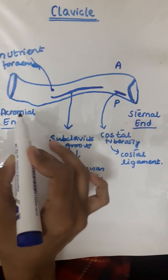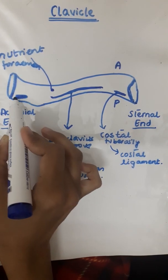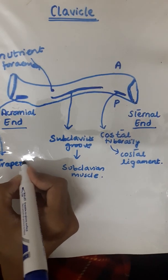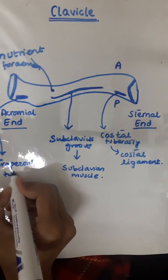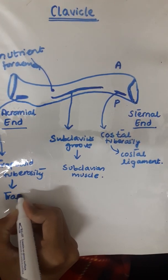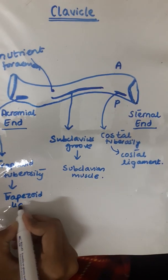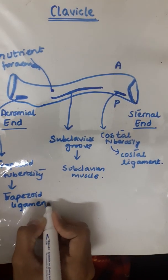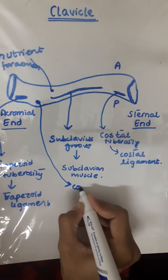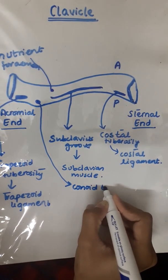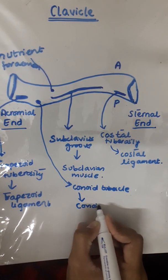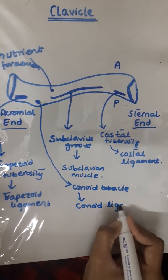At the acromial end we have the trapezoid tuberosity, which provides attachment for the trapezoid ligament. We also have the conoid tubercle, which provides attachment for the conoid ligament.